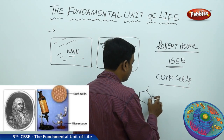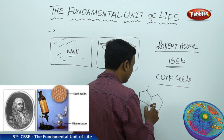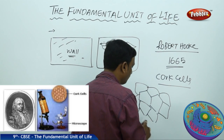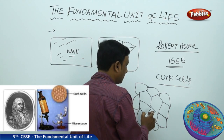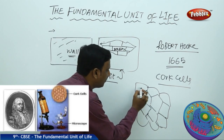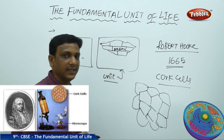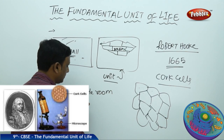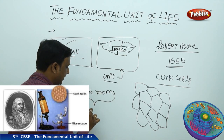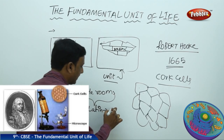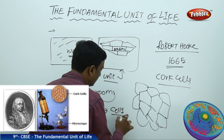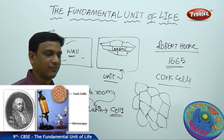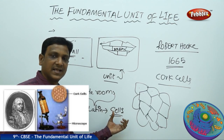There he found small, little room-like structures under the microscope. These little rooms, in Latin, are called cells. So he called these small rooms as cells, and from there the word 'cell' came into biology.